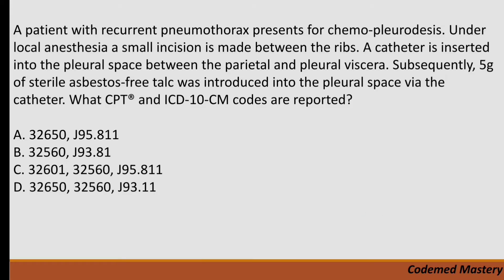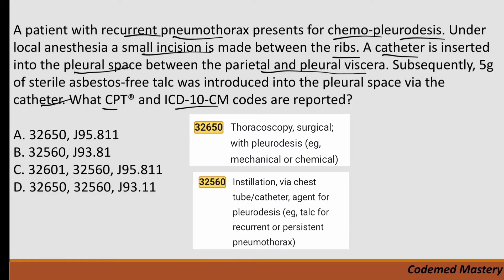A patient with recurrent pneumothorax presents for chemical pleurodesis. Under local anesthesia, a small incision is made between the ribs and a catheter is inserted into the pleural space between the parietal and visceral pleura. Subsequently, 5 grams of sterile asbestos-free talc is introduced into the pleural space via the catheter. Option A, 32650, is for thoracoscopy surgical with pleural disease. Option B, 32560, is for instillation via chest tube catheter for pleural disease — for example, talc — for recurrent or persistent pneumothorax, which matches our question.